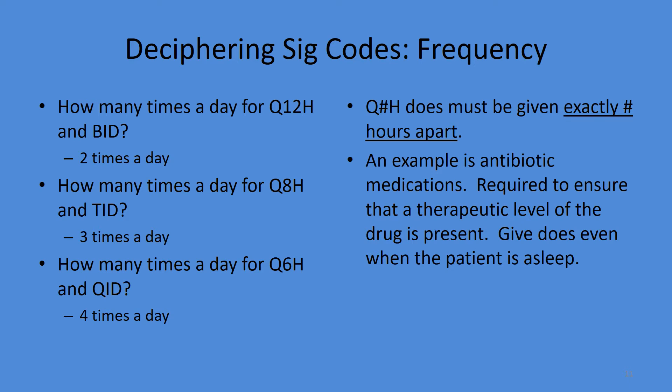Around-the-clock dosing means you may have to wake the patient up in the middle of the night because you must give it exactly for the best therapy. A key example is antibiotics: we need to maintain a therapeutic range. If levels fall too low, superbugs may form and re-colonize the body. If too much is given, many antibiotics can become toxic to the ears, kidneys, or even the liver.